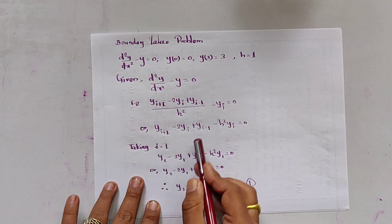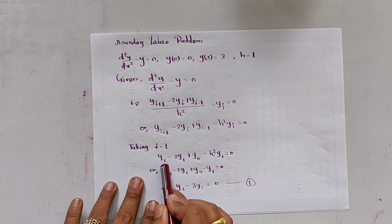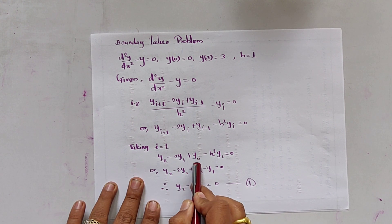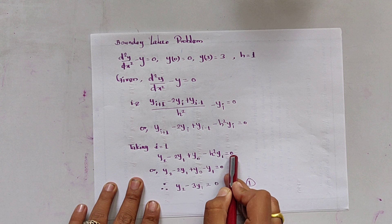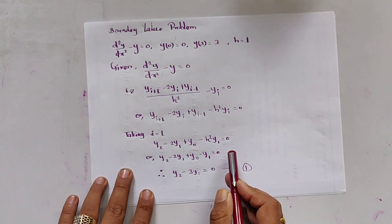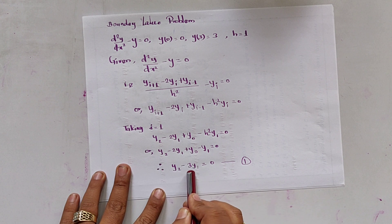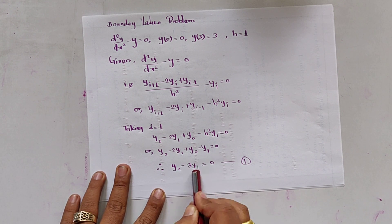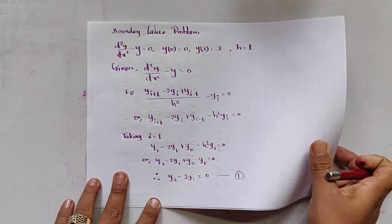Taking i = 1: y_2 - 2y_1 + y_0 - h² y_1 = 0. Since h = 1 and y_0 = 0, substituting and solving we get y_2 - 3y_1 = 0. This is considered equation 1.